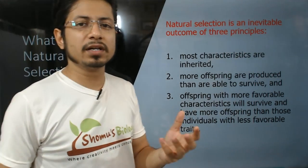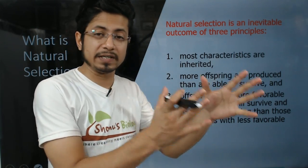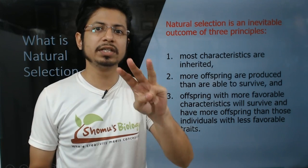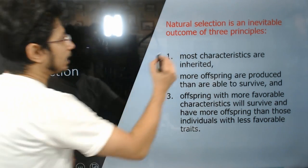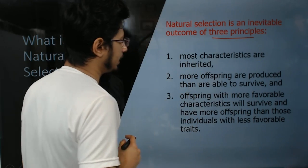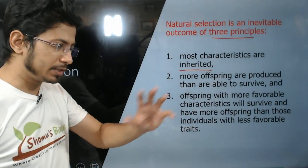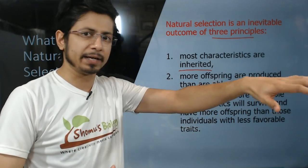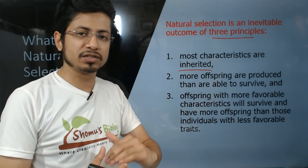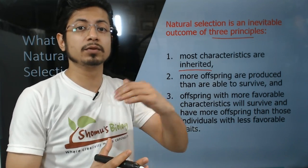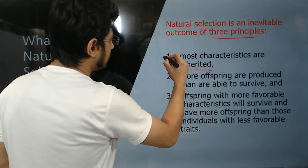To understand natural selection, you need to know three important properties because the natural selection process works on three important principles. What are those three principles? Principle number one is that most characteristics are inherited. Most of the characteristics that we see in the whole world in different animal kingdoms are inheritable characters — they can transfer from one generation to the next, from father to son or daughter, from mother to son and daughter.